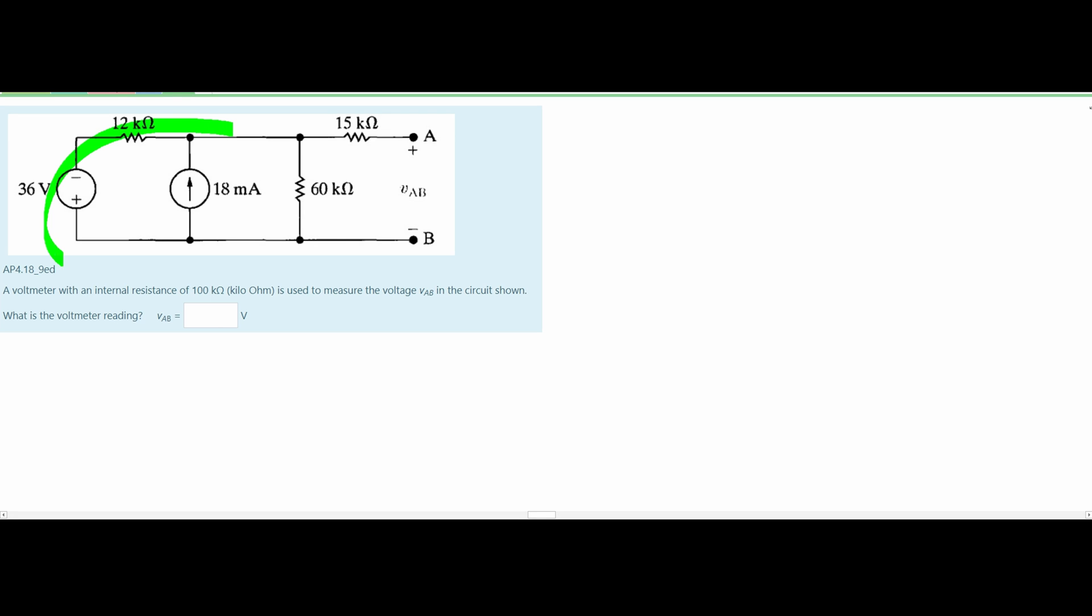In this problem we are given a circuit diagram. We are told that a voltmeter with internal resistance of 100 kilo ohms is used to measure the voltage V of AB in the circuit shown.